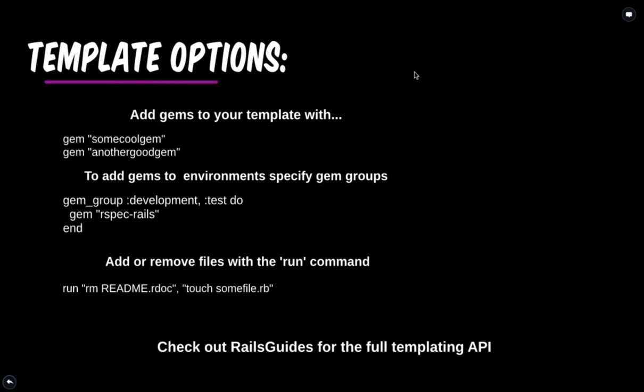You can also run commands using the keyword run, with the command in quotations. For example, run 'rm README.rdoc' will remove the README file. Another example would be run 'touch some_file.rb', which will create a file named some_file.rb. Keep in mind that the template is executed sequentially, so code at the top executes first and code at the bottom executes last. If you want to install all of your gems and have them bundled, you wouldn't want to have a gem name at the bottom of your file after a bundle block, because it would not be included in the bundle.